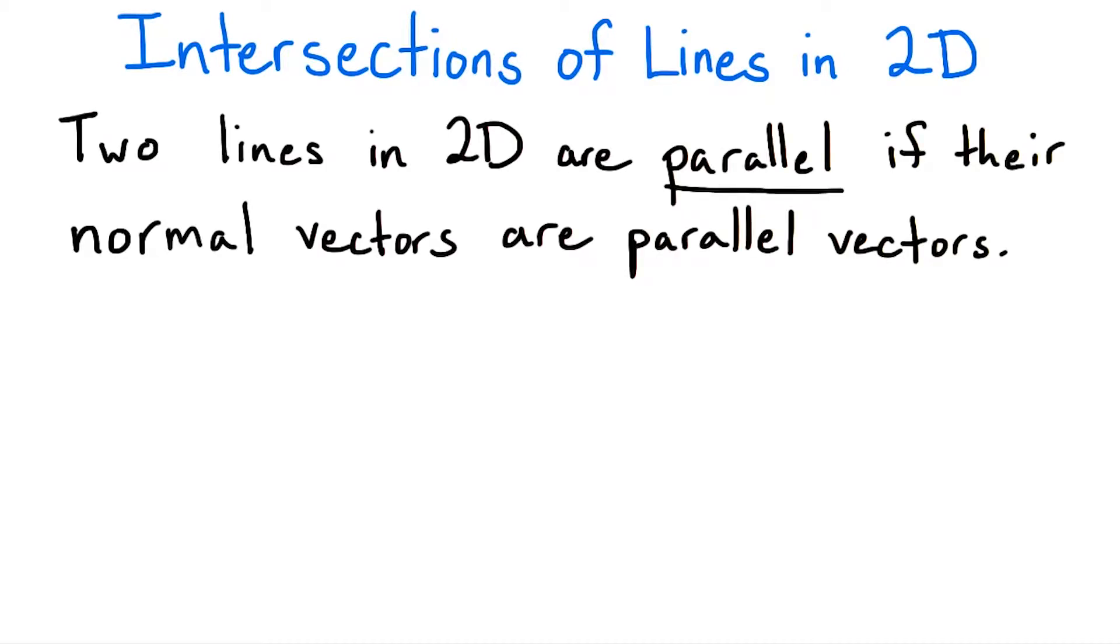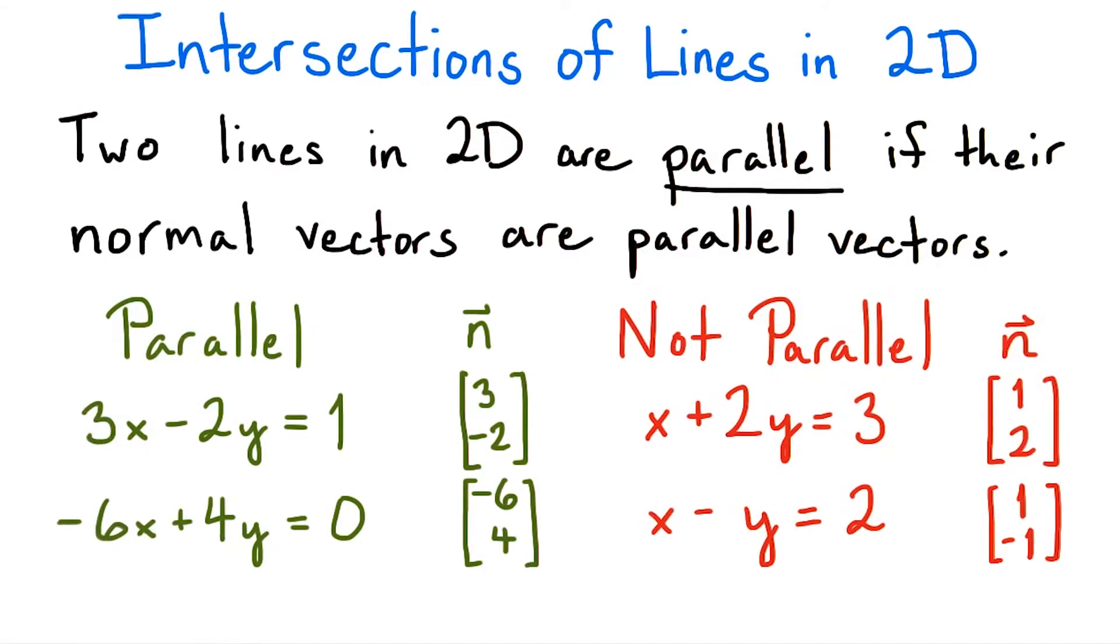First, let's make a definition. Two lines are parallel if their normal vectors are parallel. For example, these lines are parallel because their normal vectors differ by a factor of negative 2.